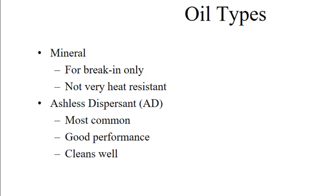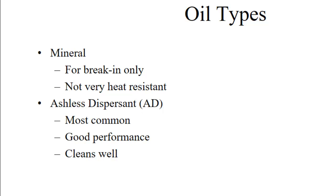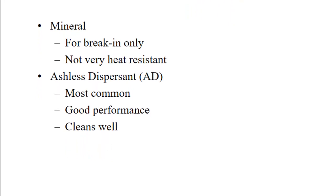Ashless dispersant is essentially a detergent oil, and this is the most common type. It does a good job of keeping the inside of the engine clean. This is true of modern automotive oils as well — they keep the inside of your engine clean just fine. So if you go to a quick lube shop and they try to sell you a crankcase flush, tell them no thank you, because modern oils have been keeping your engine clean inside just fine.